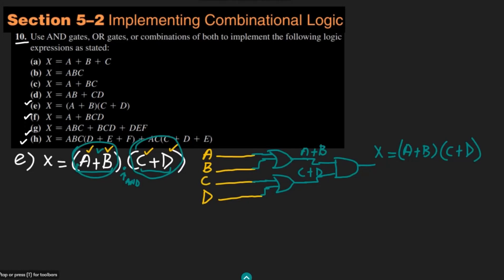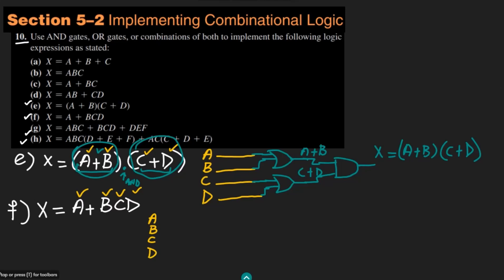Similarly for part F, we have X equal to A plus BCD. I will solve it using two possible combinations: one where gates can have any number of inputs, and one where I have only two-input gates. The number of inputs are again four: A, B, C, and D.